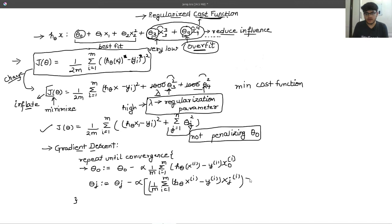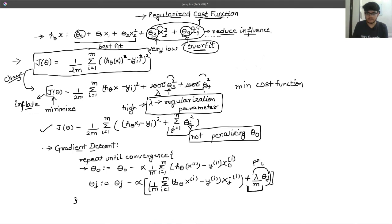Now we will add the regularization parameter. We divide lambda by m and then write theta j. This is the only change that comes in our gradient descent algorithm, because we are analyzing the theta j values and changing them. Remember, it is now lambda by m. This term performs regularization.